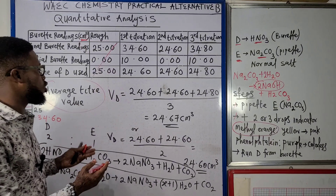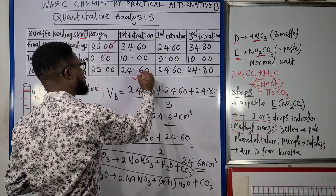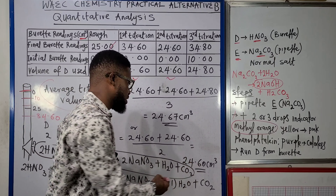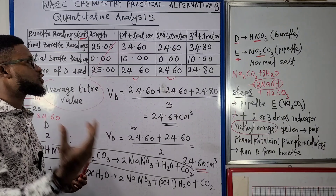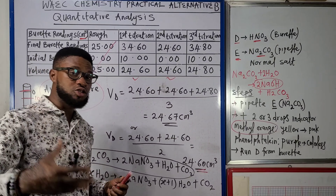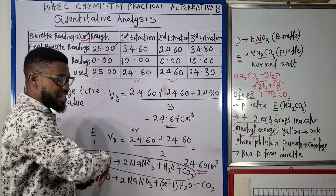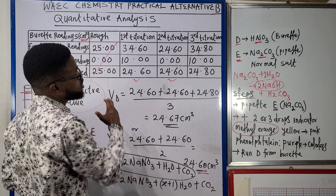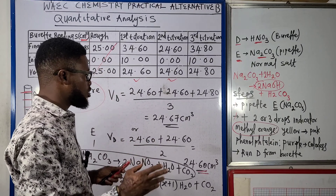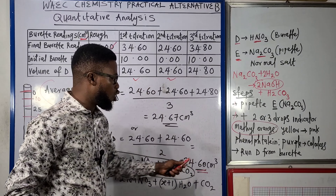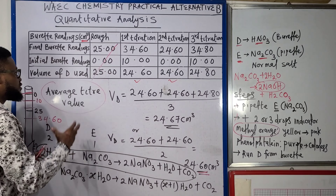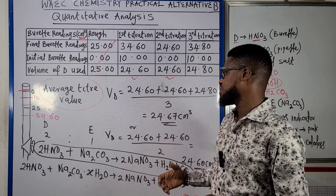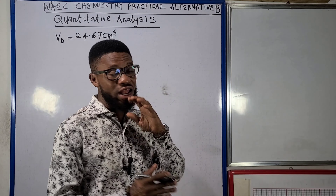Alternatively, you can use just the two concordant values: (24.60 + 24.60) ÷ 2 = 24.60 cm³. In the calculations that follow in this lecture, we will be using either 24.67 or 24.60 cm³ as the average volume of D — the average titer value. Take note of that.